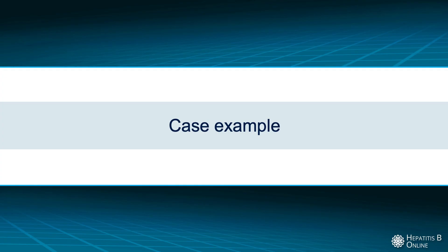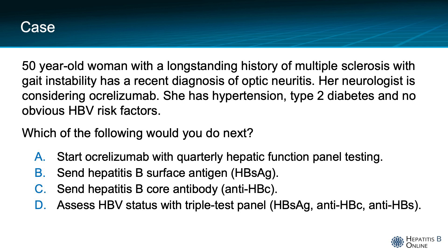So let's run through a case. This is a 50-year-old woman with a long-standing history of multiple sclerosis with gait instability who has a recent diagnosis of optic neuritis. Her neurologist is considering ocrelizumab. She has hypertension, type 2 diabetes, and no obvious HPV risk factors. Which of the following would you do next? Start ocrelizumab with quarterly hepatic function panel testing; send hepatitis B surface antigen; send hepatitis B core antibody; or assess HPV status with a triple test panel?